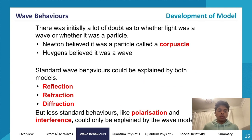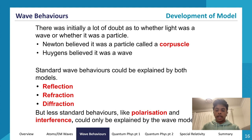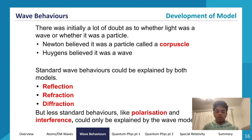Standard wave behaviors like reflection, refraction, and diffraction could be explained by both models. However, less standard behaviors like polarization and interference could only be explained by the wave model — giving it an edge over the corpuscular model, which could not account for these phenomena.